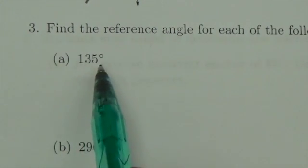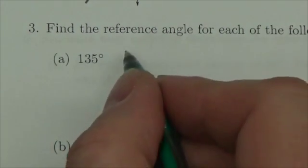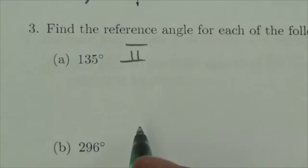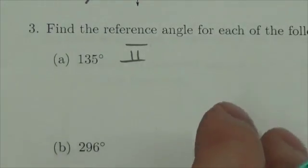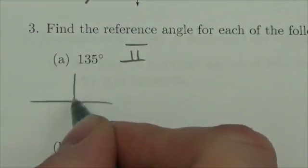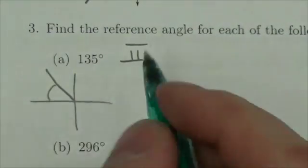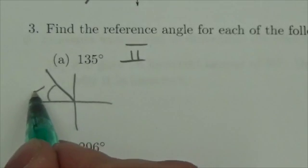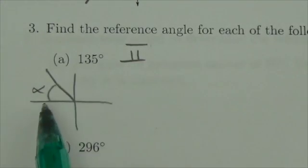So 135 is bigger than 90, less than 180, so this is in quadrant 2. Now remember that the reference angle is always between the terminal arm and the x-axis. I'm gonna use alpha here to refer to our reference angle. It's always this angle right here.